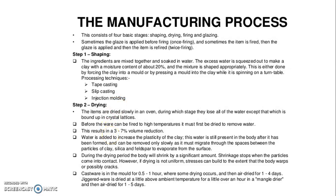In the drying step, the items are dried slowly in an oven, during which stage the piece loses all of the water except that which is bound up in the crystal lattice. Before the piece can be fired to high temperature, it must first be dried to remove the water. This results in a 3 to 7% volume reduction.